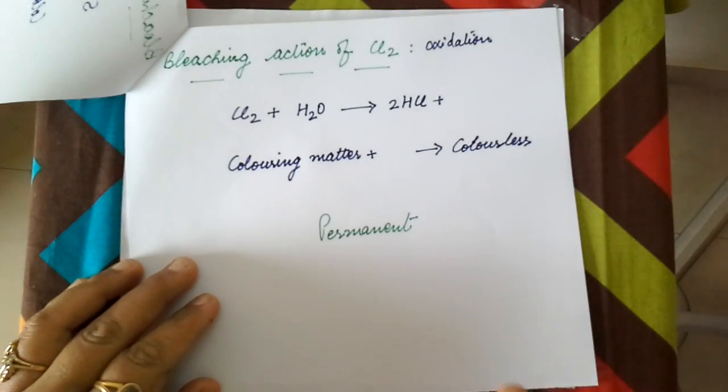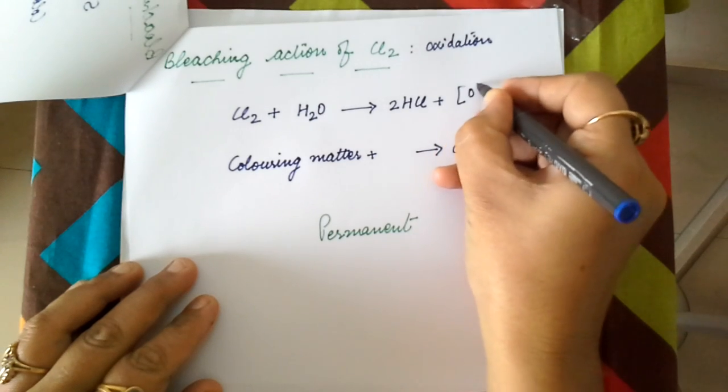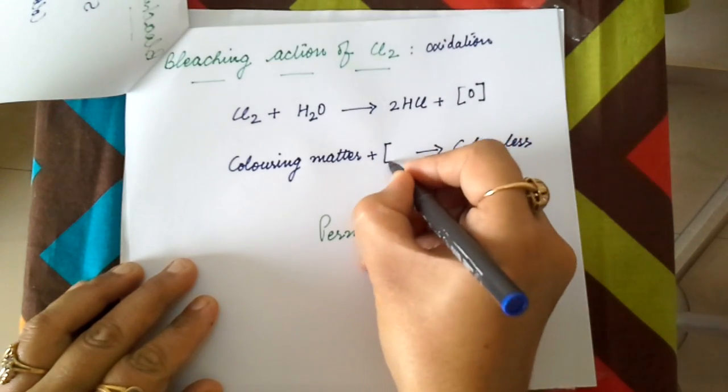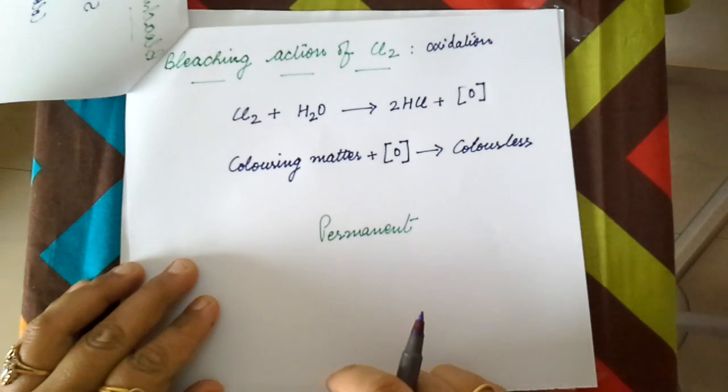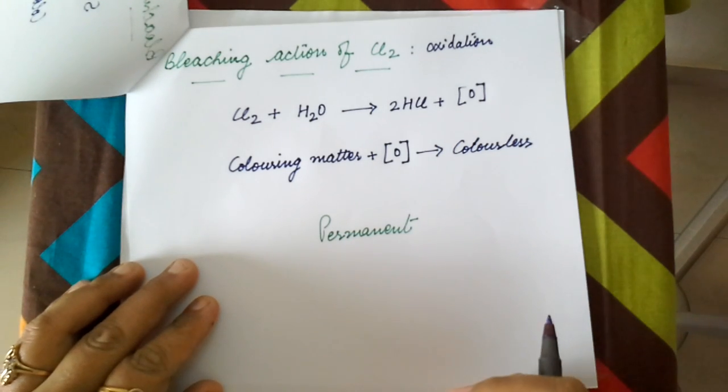Chlorine in the presence of water gives out nascent oxygen, and the coloring matter is oxidized to colorless matter. Chlorine bleaches by oxidation, which is why the bleaching action of chlorine is permanent.